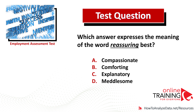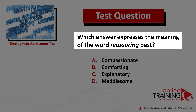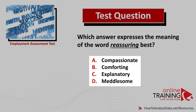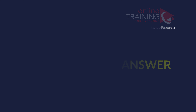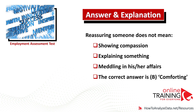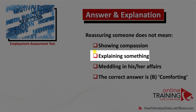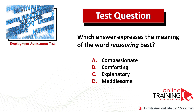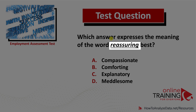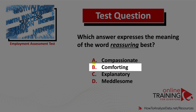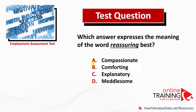A lot of times you might get a question which validates your knowledge of English word meanings. Which answer expresses the meaning of the word 'reassuring' best? Choices: compassionate, comforting, explanatory, meddlesome. Reassure typically means removing doubts or fears for someone. Reassuring does not mean showing compassion, explaining something, or meddling in affairs. The correct answer is choice B, comforting. To answer correctly, understand the meaning of the source word, then exclude words that don't match.